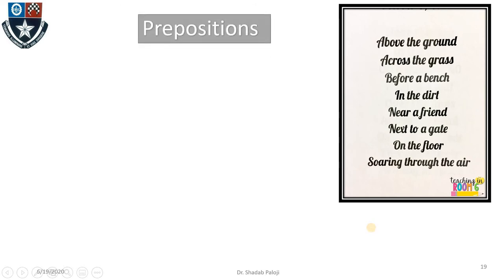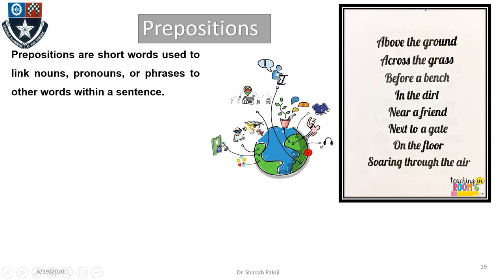Now let us look at prepositions — the next part of speech. Read this small poem to understand: 'Above the ground, across the grass, before a bench, in the dirt, near a friend, next to a gate, on the floor, soaring through the air.' This poem shows the positions of nouns. Notice the words: 'above,' 'across,' 'before,' 'in,' 'near,' 'next,' 'on,' 'through.'